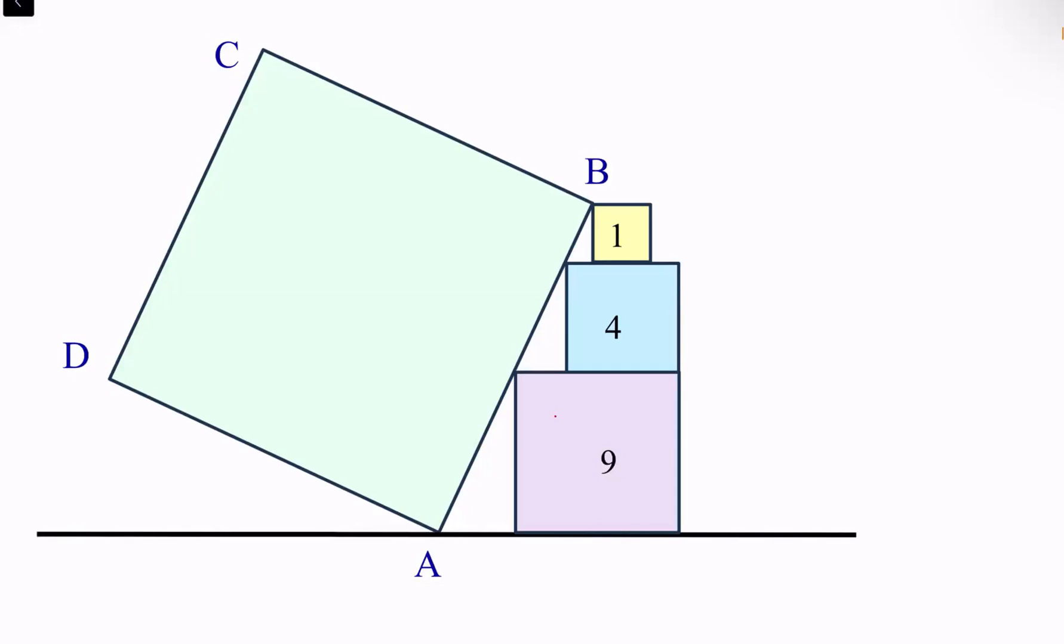In this question, three squares with areas of 1 cm², 4 cm², and 9 cm² are stacked on top of each other. A bigger square ABCD is inclined as shown in the figure, where vertex B is meeting the vertex of the small square and the vertices of the other squares are touching the sides of the bigger square. Using this data, we have to find the area of the bigger square.